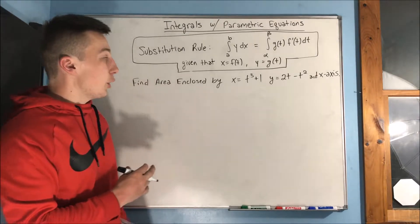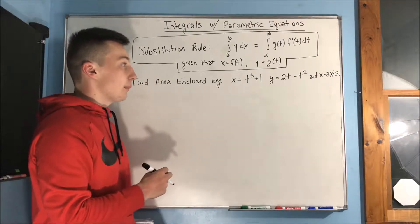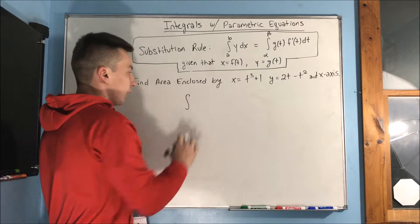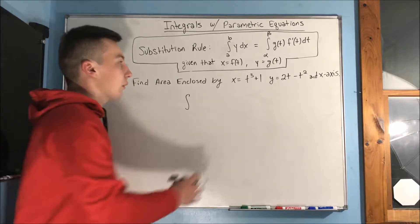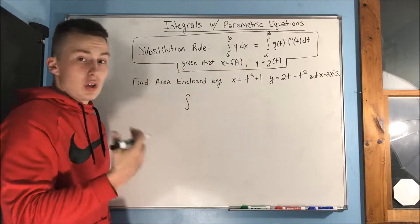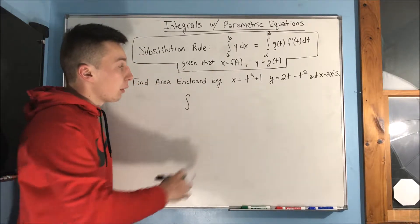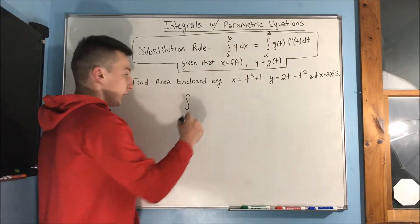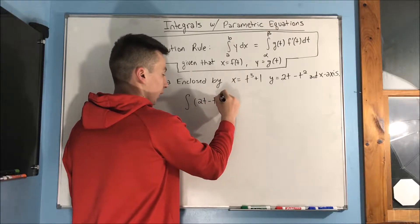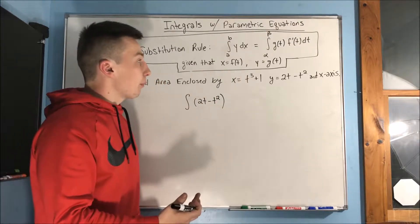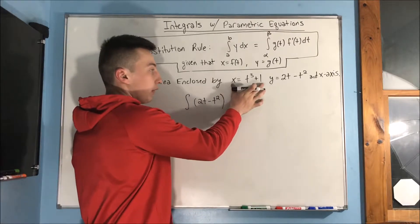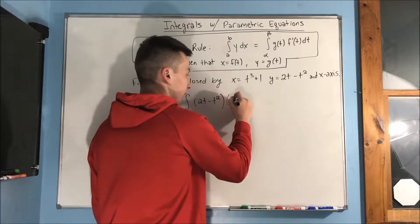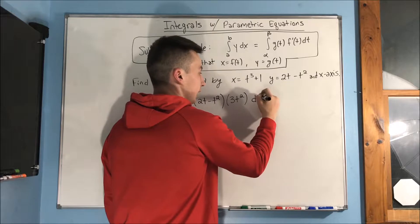That's literally all you have to do to integrate parametric equations. So let's try an example: find the area enclosed by x equals t cubed plus 1, y equals 2t minus t squared, and the x-axis. Let's set up our integral. Our g of t is y, so that's 2t minus t squared — that goes into our integral. And f prime of t means we take the derivative of the x piece, which gives us 3t squared. And we have dt at the end.